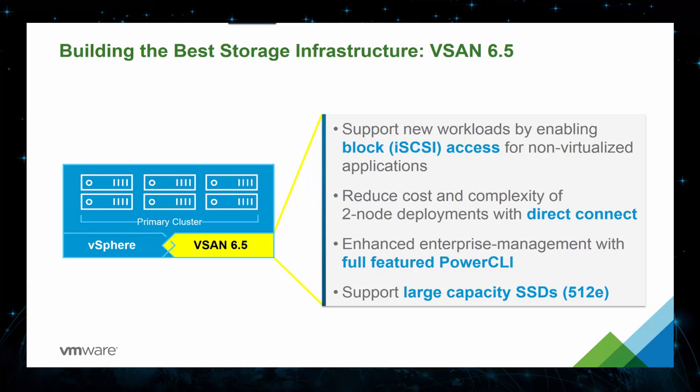The next key feature of virtual SAN is targeted at a popular use case: remote office or branch office, or robo environments. Many of our customers would like to minimize their upfront costs of deploying virtual SAN at remote sites. We took a first step here with virtual SAN 6.1 where we added support for two-node clusters. To further bring down the cost of robo deployments, we're now adding the ability to directly connect two vSphere servers together using simple crossover cables. What this means is customers no longer need to purchase, install, or maintain routers and switches between their two nodes.